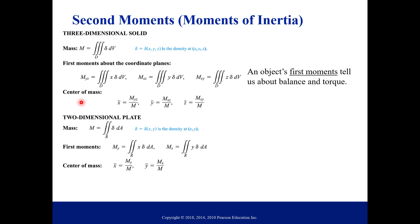And then we can divide our first moment by our mass to get our center of mass, our coordinates X bar, Y bar, Z bar. Very similar for the two dimensional plate. And so an object's first moments tells us things like the balance or the torque, and you can think of the torque experienced about different axes in a gravitational field.